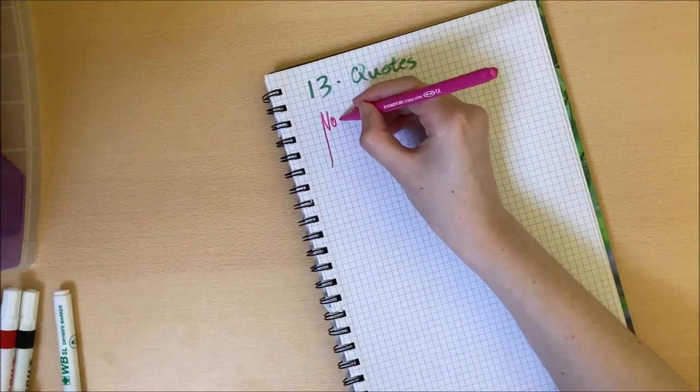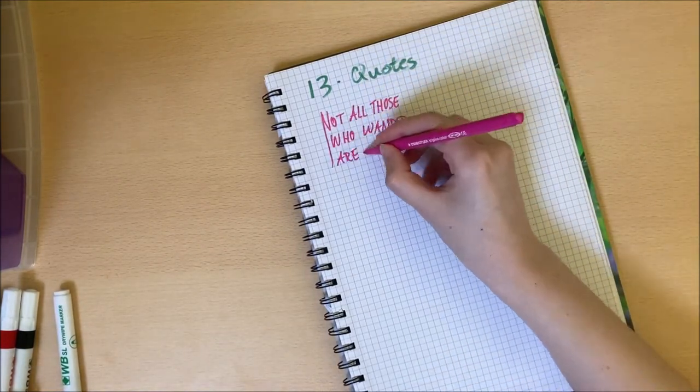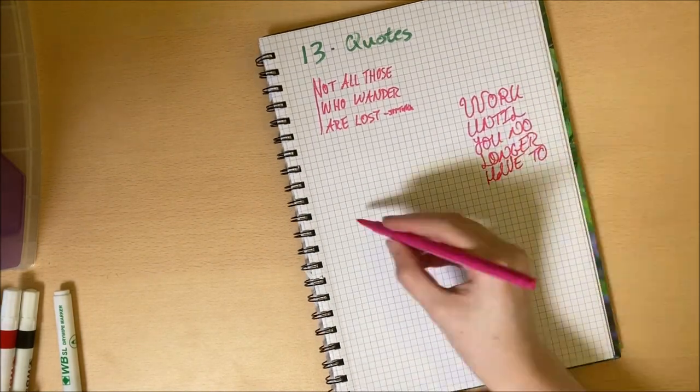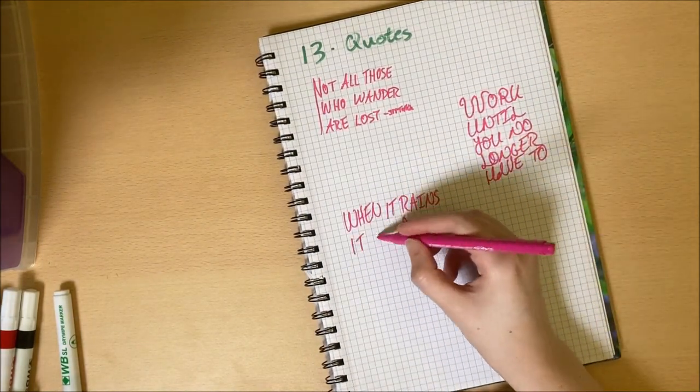Number 13 is to use the paper as a place to track quotes. This could be inspirational quotes, motivational, funny things that you've heard or even just conversations you've had with your friends.